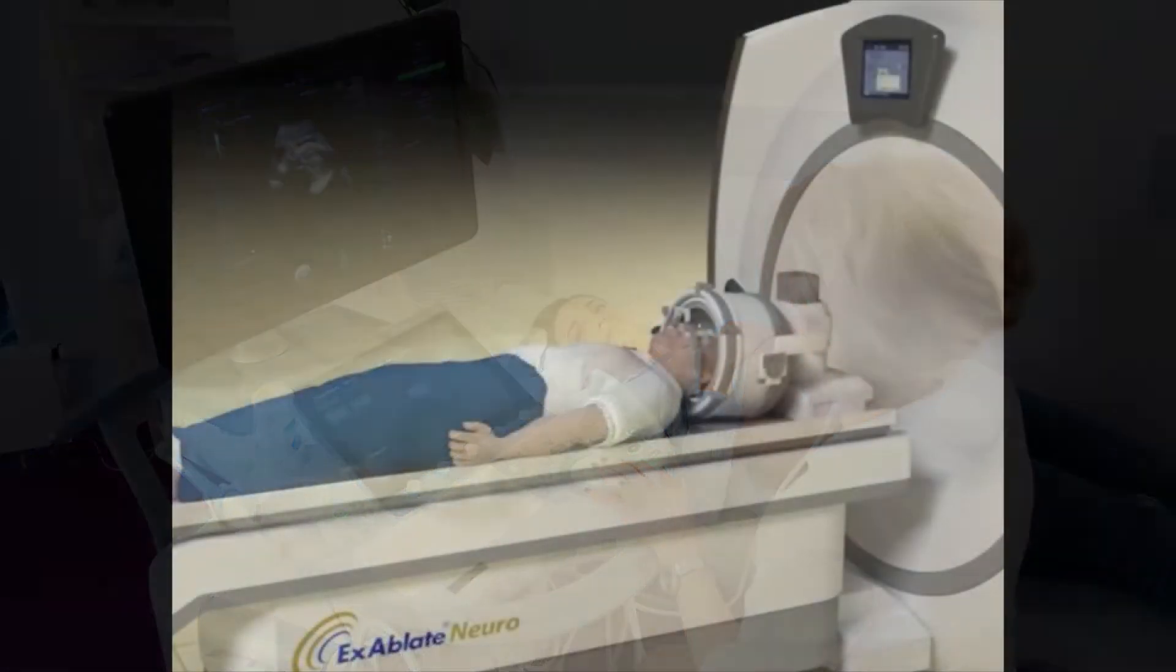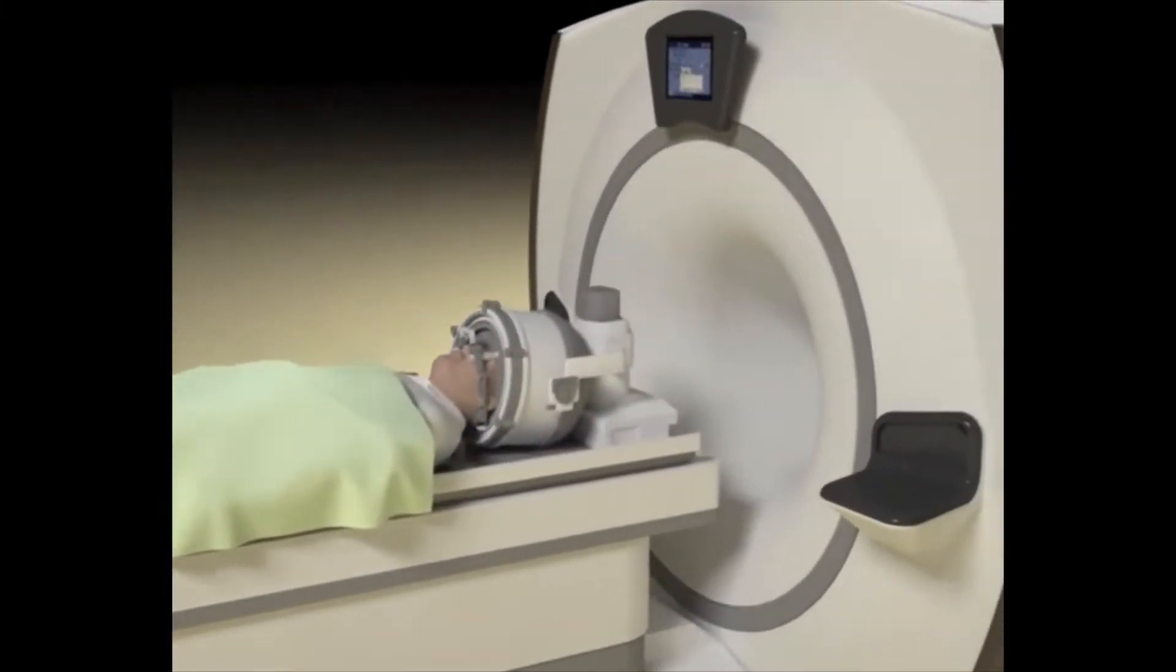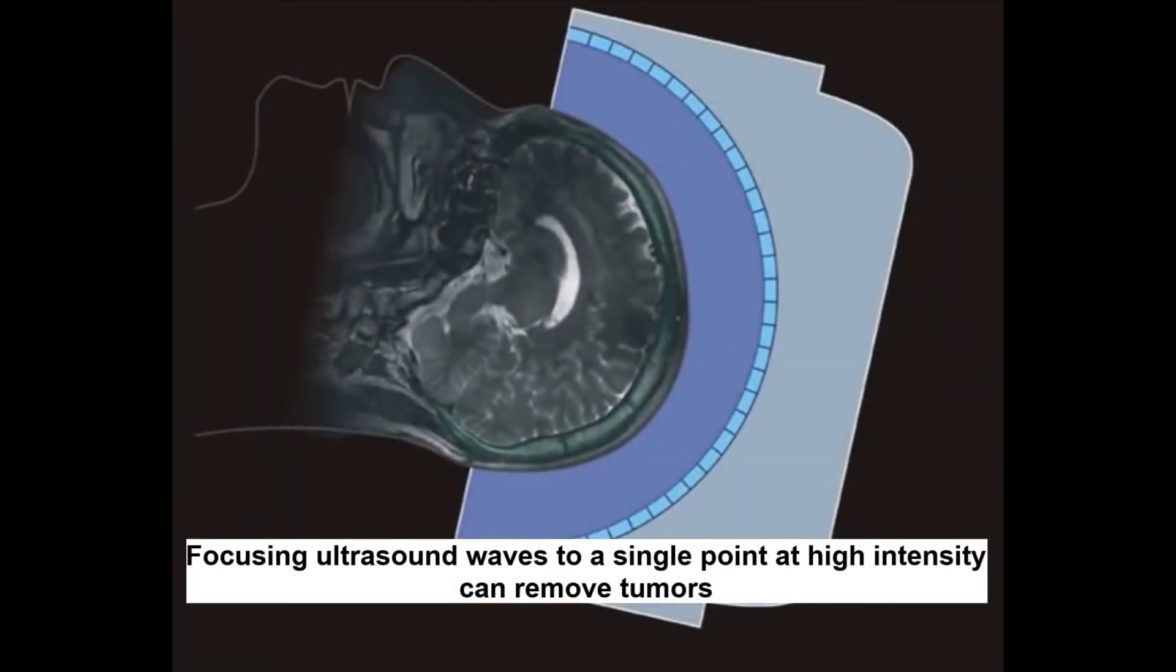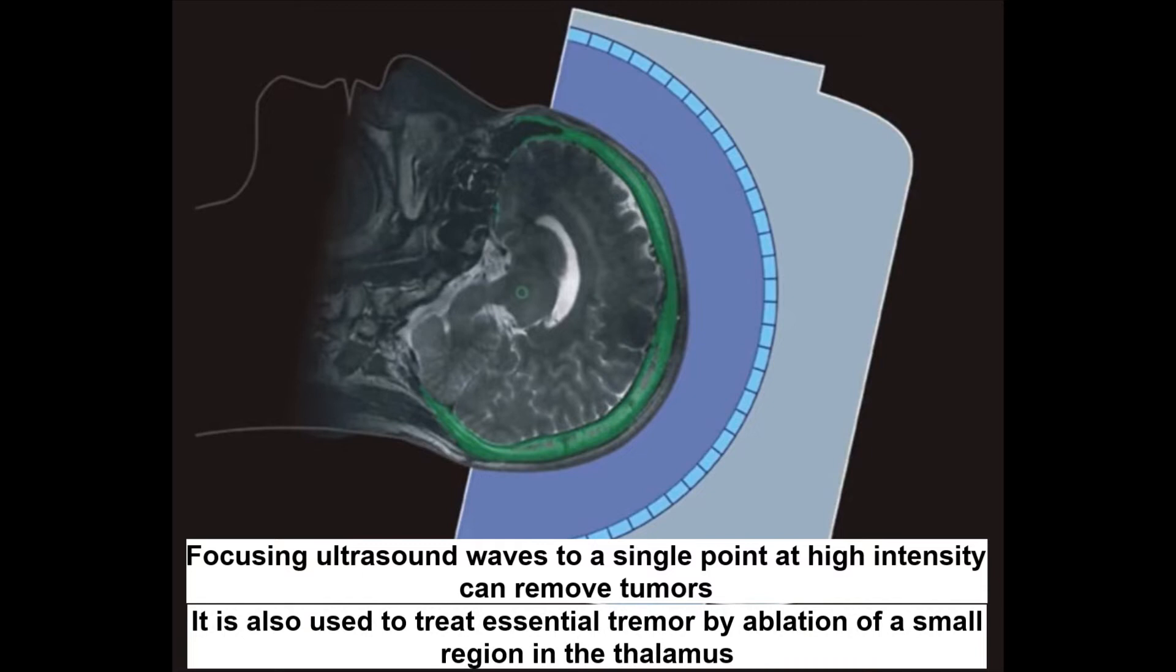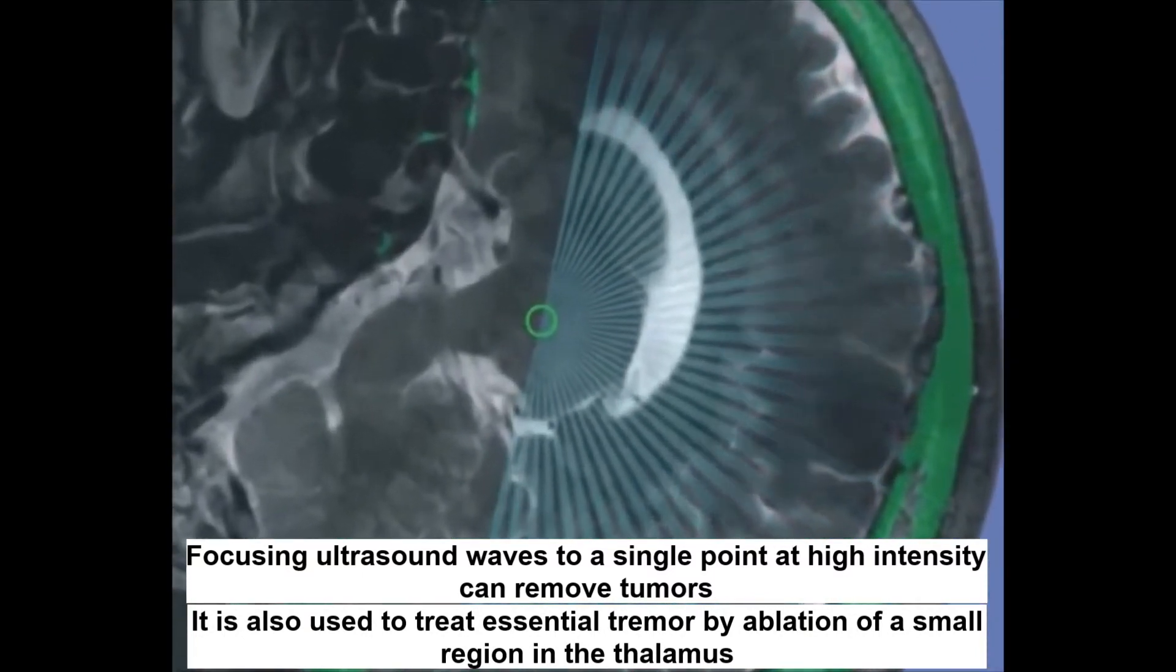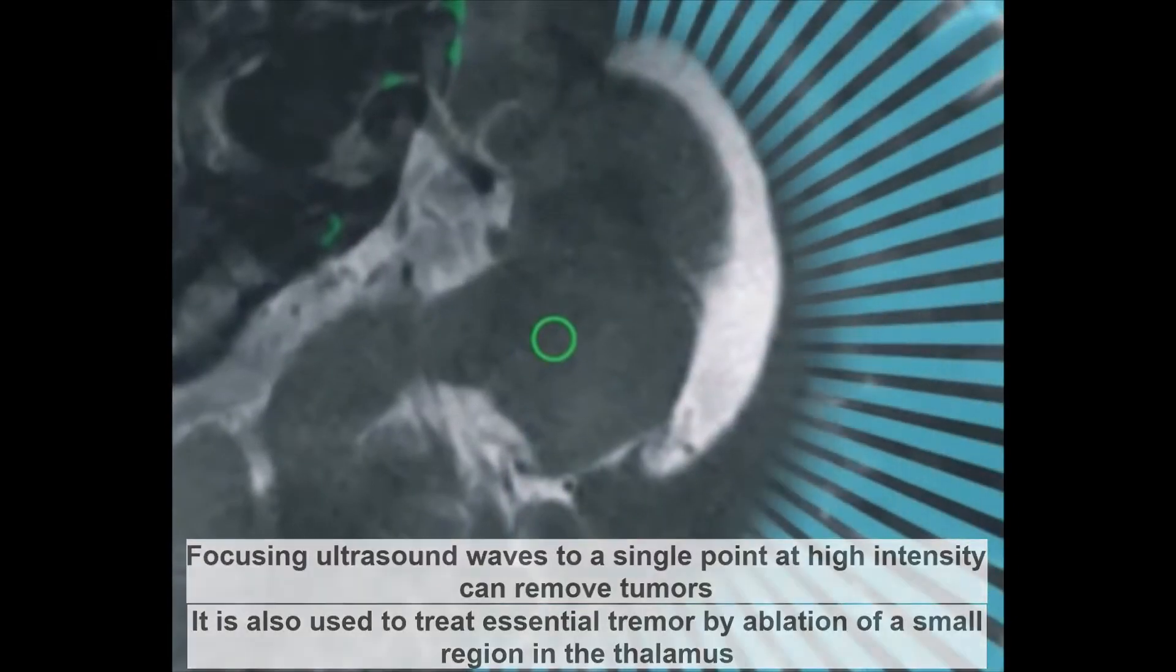By focusing ultrasound waves to a single point and using it at a high intensity, tumors can be removed. But how is that possible? By creating a focal point, a lot of energy is created in a single spot. If this intensity is high enough, malignant cells can be destroyed.